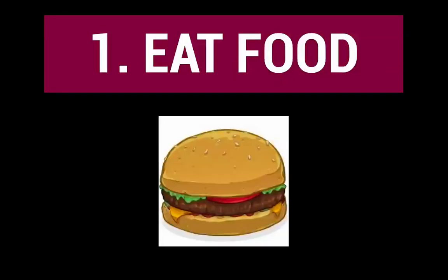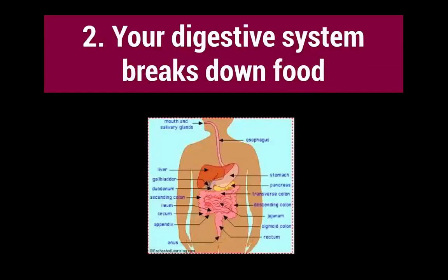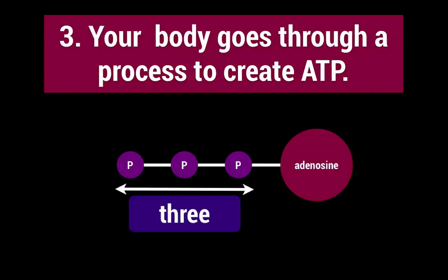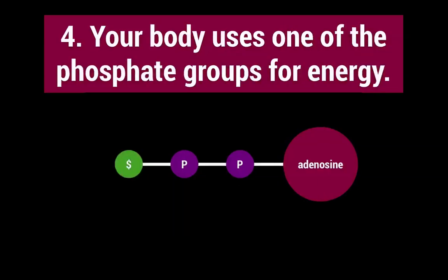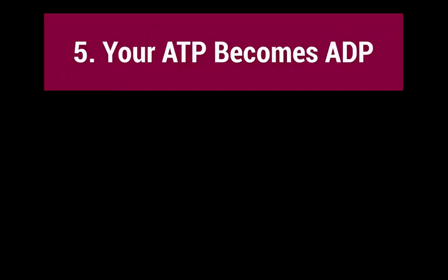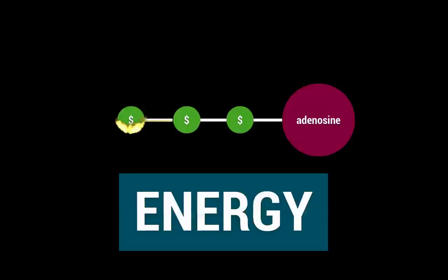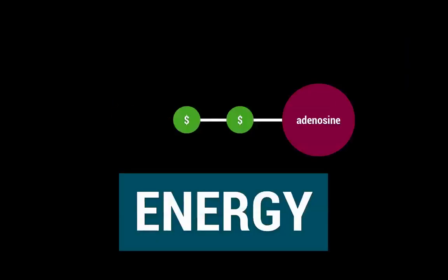So how does ATP work with humans? Well, first of all, you go to your favorite fast food restaurant, go home and have some home cooking — whatever it is that you do. Your digestive system breaks down the food, and your body goes through a process to create ATP. Then your body uses one of those P's in the phosphate group for energy. The ATP becomes ADP by burning off one of those P's as energy, and energy is later added back in when you eat more food, and ADP becomes ATP once again.